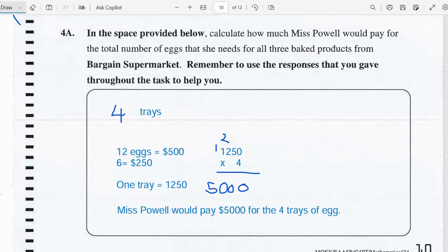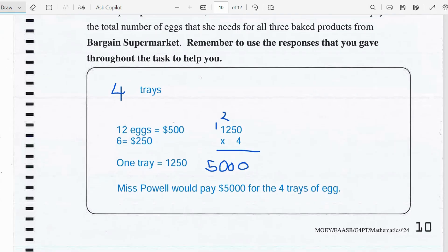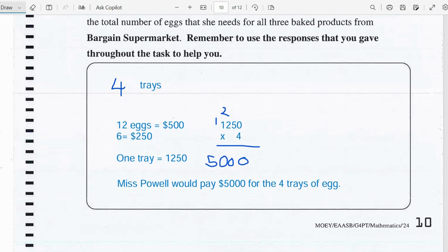And we have been doing that. So in part 2 we learned that she needed 4 trays of eggs. And if we buy 12 eggs they would be for $500 and 6 eggs would be for $250. So 1 tray, if we remember, the tray has 30.